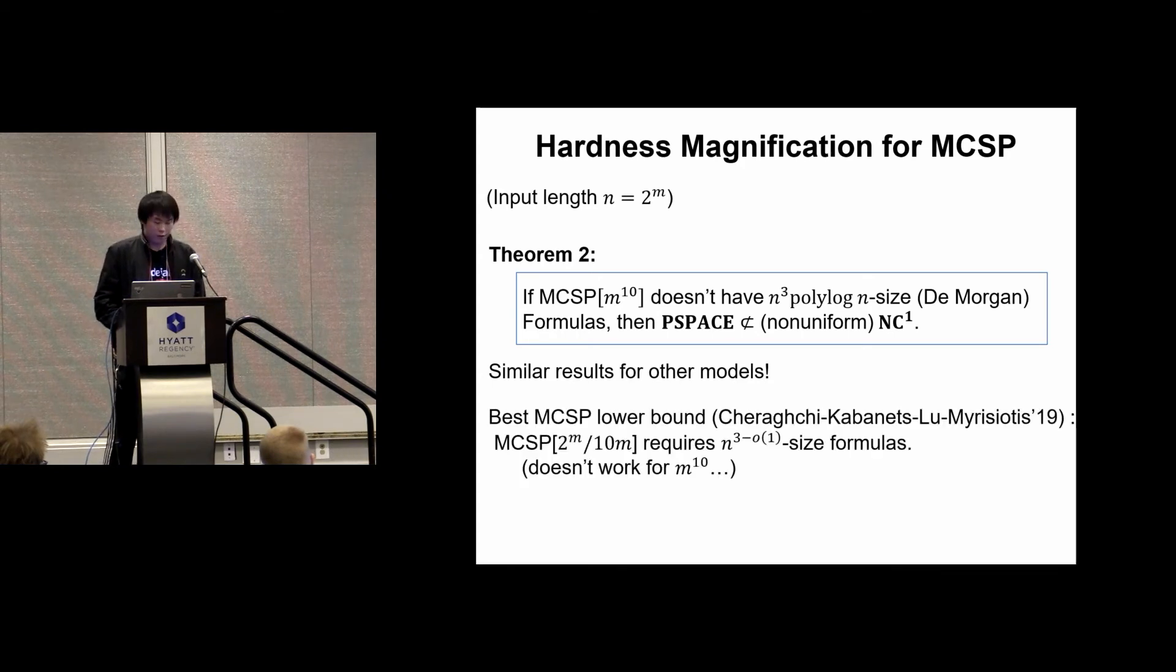We could compare this with the best-known MCSP lower bounds. In a recent ITCS paper, it's shown that MCSP 2^m / 10m requires roughly n^3 size formulas, which is pretty close to our hypothesis. But unfortunately, the sparsity doesn't satisfy our requirement. We require m^10, but their MCSP is a dense version of MCSP.